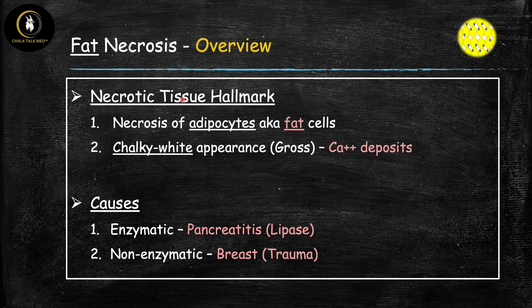Now let's talk about fat necrosis. The hallmark is necrosis of adipocytes, aka fat cells — that's why the necrotic tissue contains an abundant amount of adipocytes. The second important feature is that on gross pathology there's going to be a chalky white appearance, which is classic for fat necrosis. That's due to the presence of calcium deposits, which we'll cover shortly.